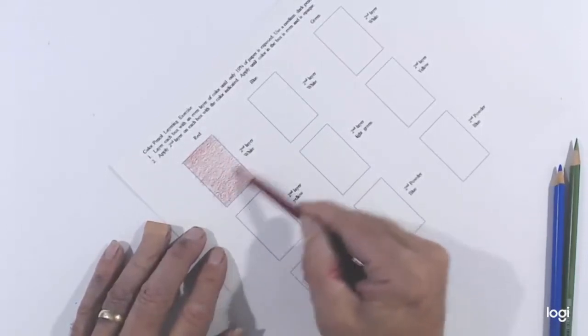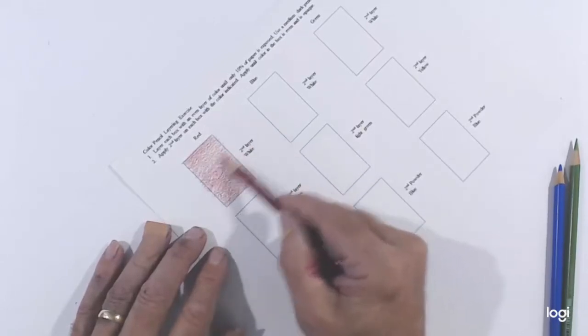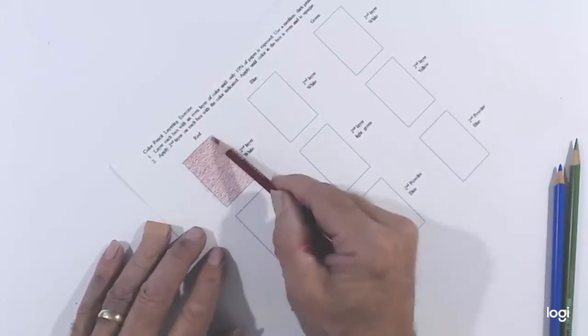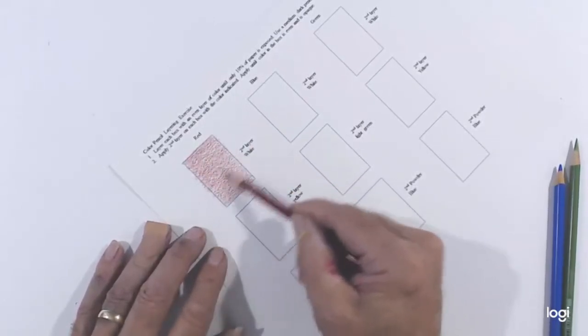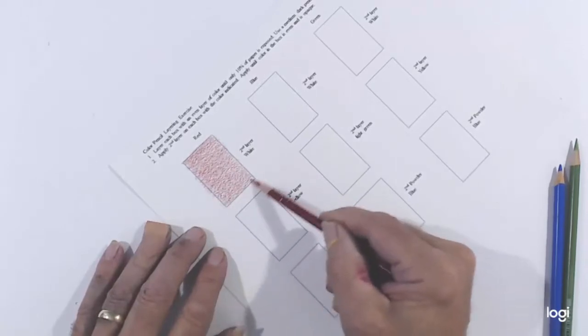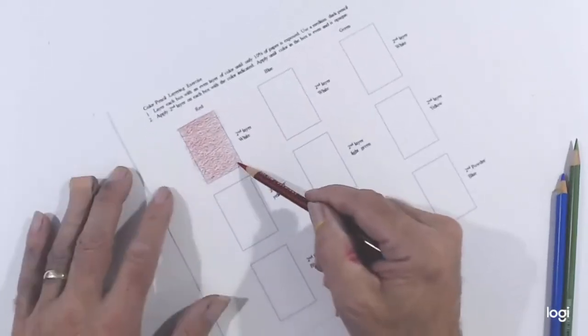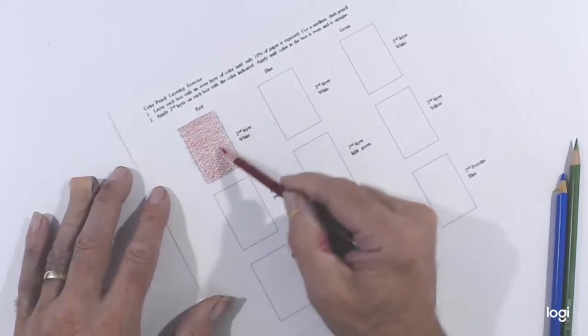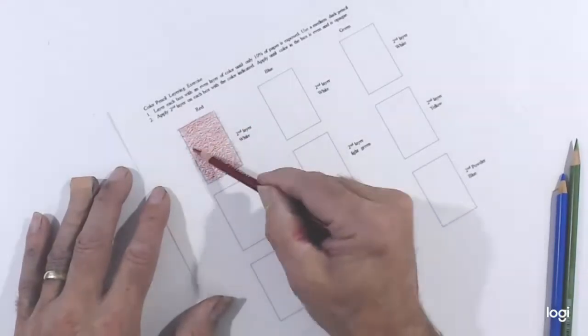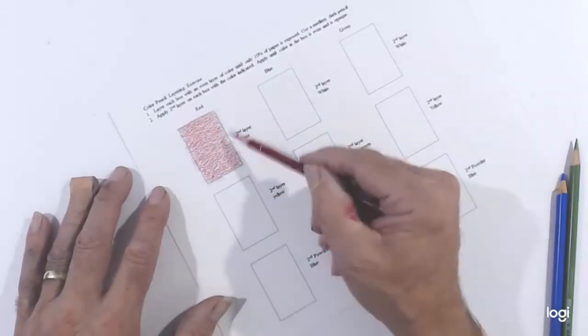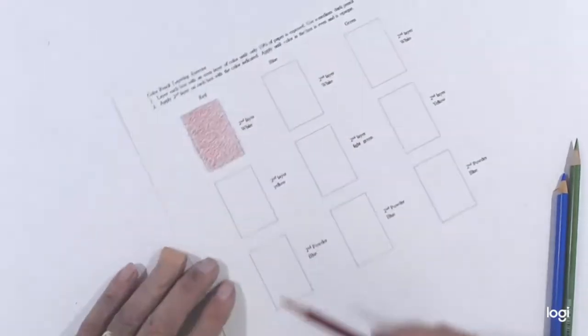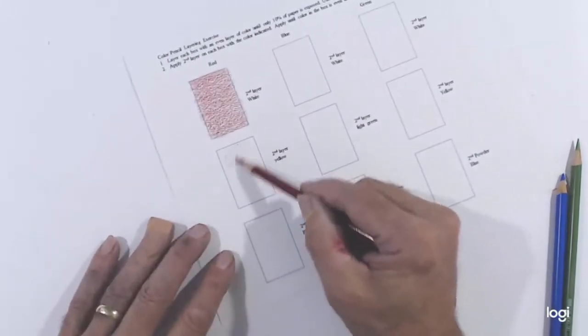We'll use red, blue, and green as our base or first layered colors. After that, we'll use white, another color, and powder blue to layer on top to see how that changes the color and what effect it will create.